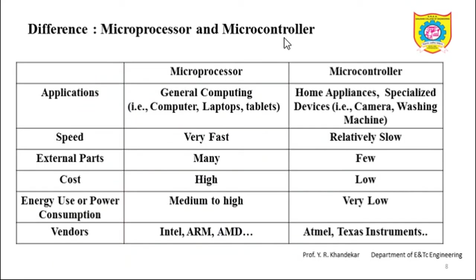Now let us see the differences between microprocessors and microcontrollers. First, application: microprocessors are used in general computing devices such as computers, laptops, and tablets. In a computer we install several softwares such as gaming applications, photo editing software, and simulation software — all demanding intensive processing. Microcontrollers are used in home appliances and specialized embedded devices such as cameras, washing machines, TVs, and TV remotes. Next, the speed of microprocessors is very fast, because the devices in which they are used require intensive processing.